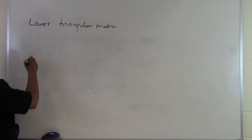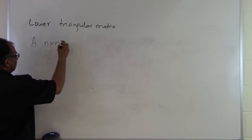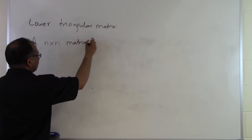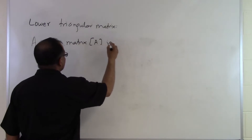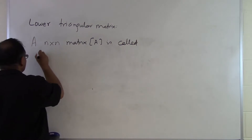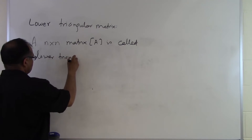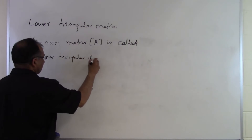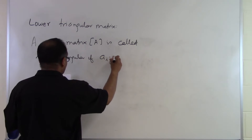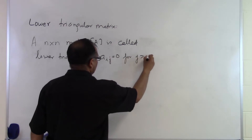Let's define what a lower triangular matrix is. An n by n matrix — so we are talking about a square matrix here — is called lower triangular if A_ij is equal to zero for J greater than I.